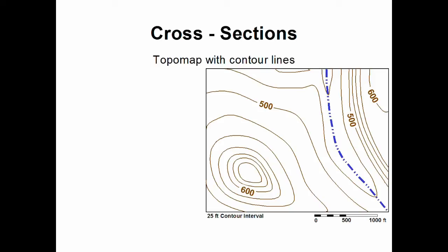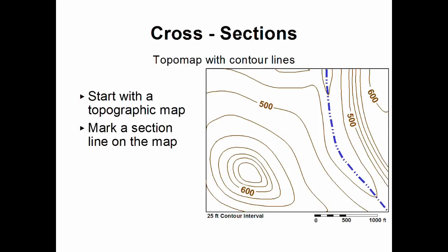Now what's a cross-section? Well we start with a topographic map and it should have contour lines on it like the one given in this example. That's our beginning point.